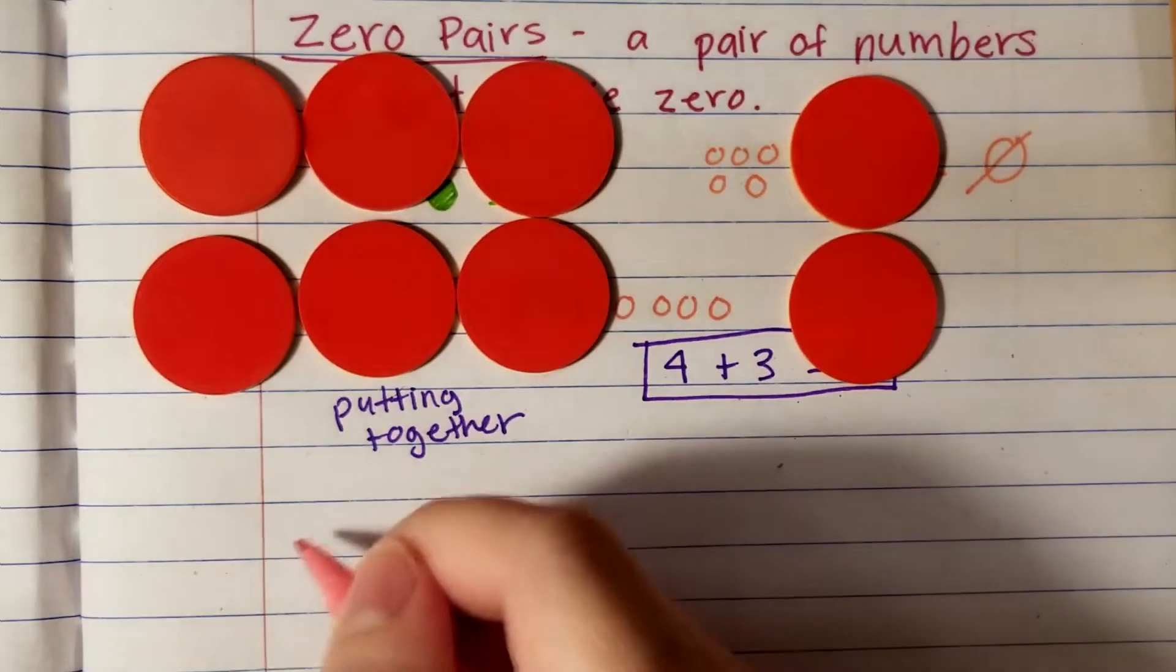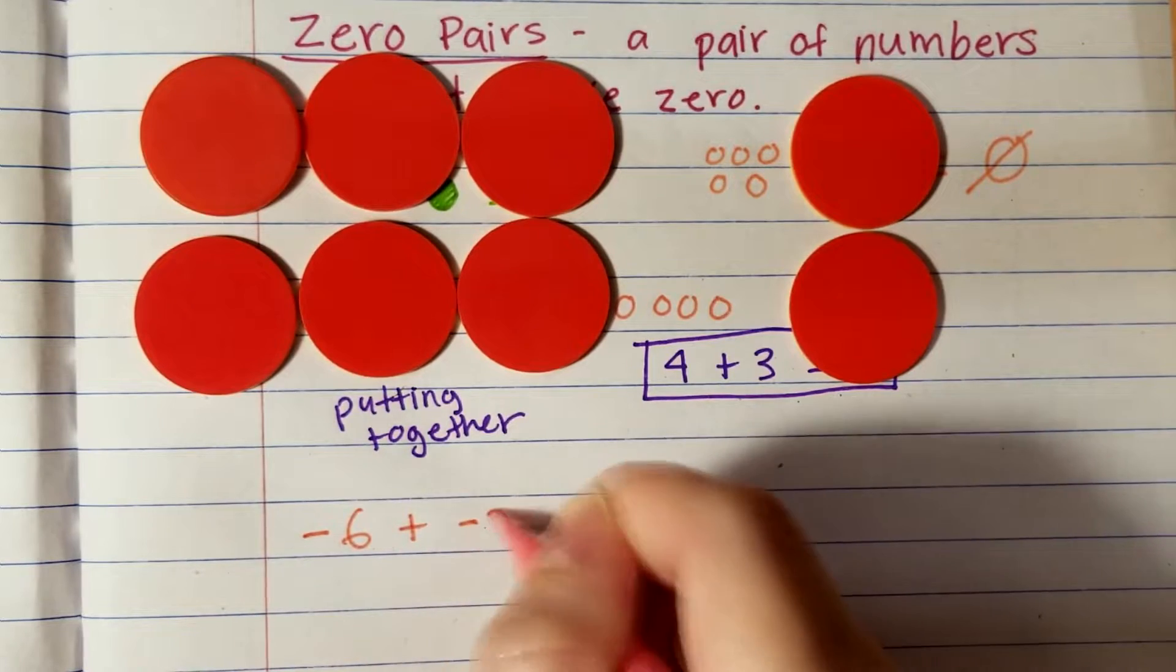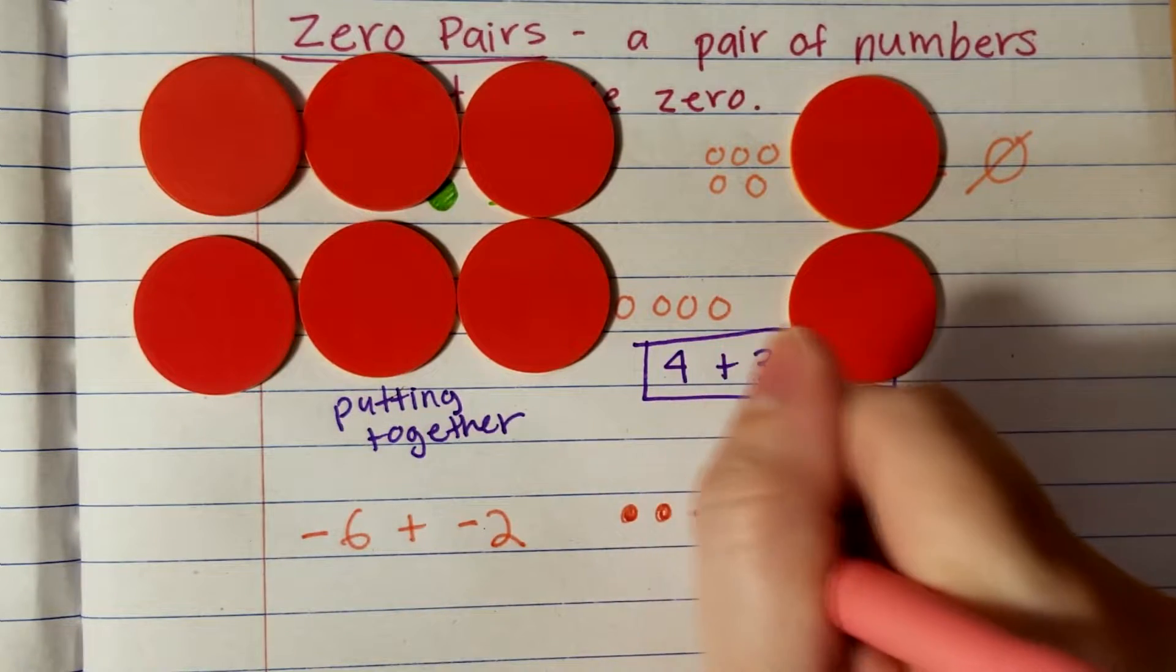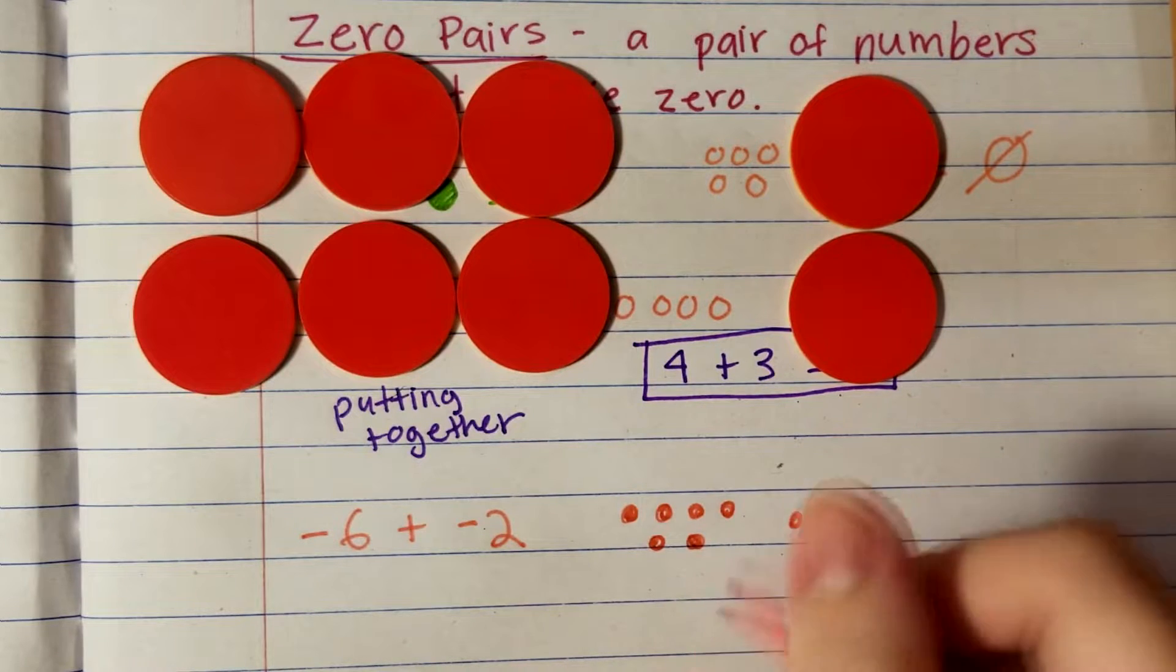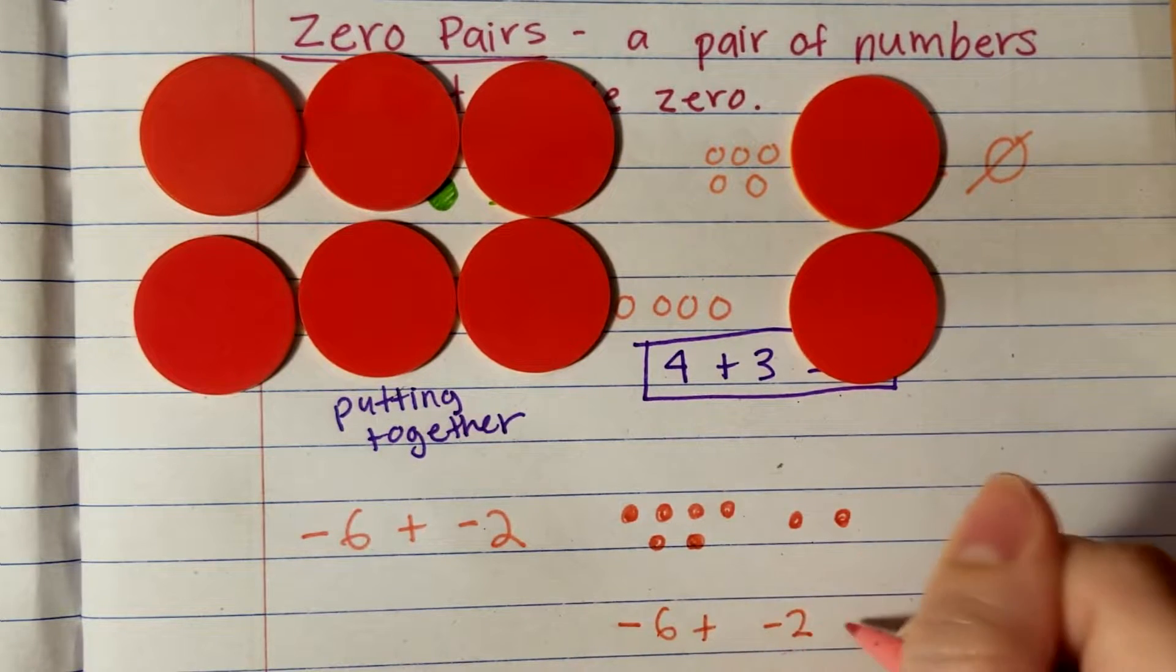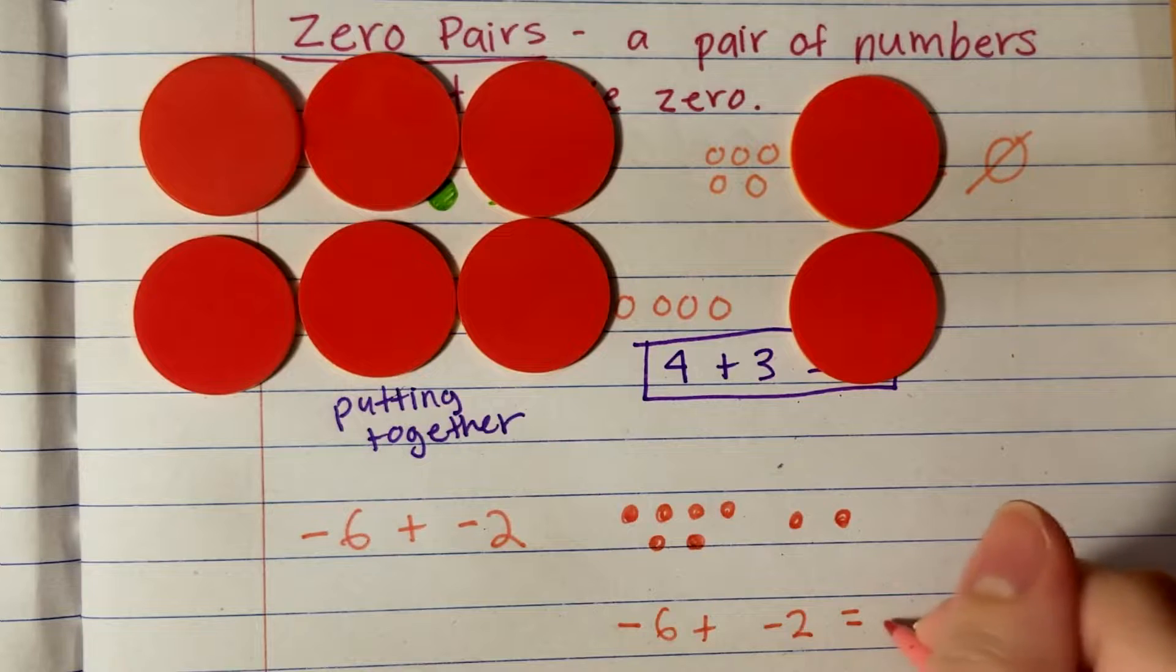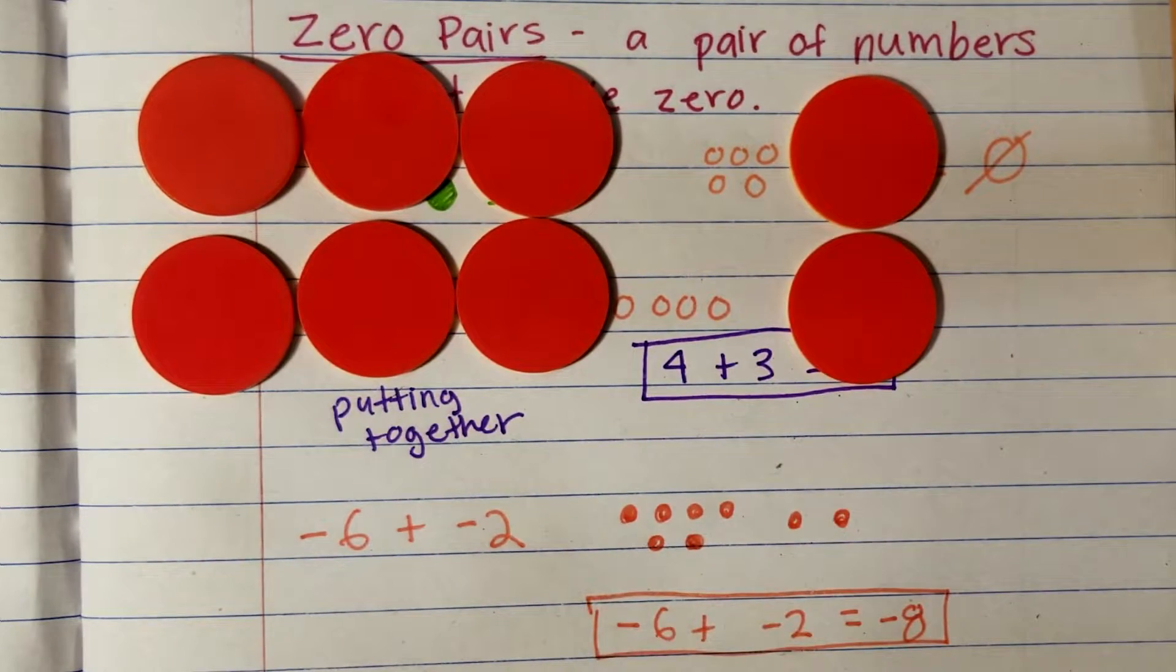Now with negatives. Negative six plus negative two. I see we have six negatives and we are putting it together with two negatives. Altogether, I count eight negatives. Negative six plus negative two equals negative eight.